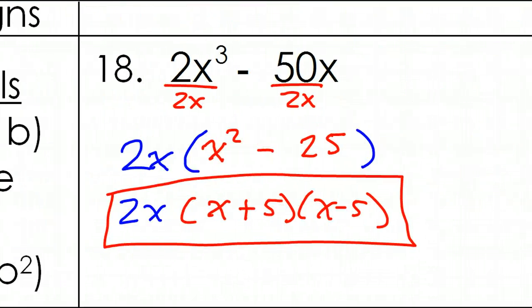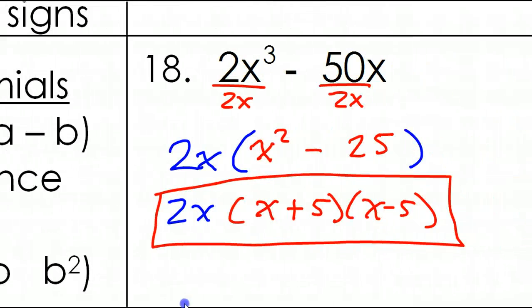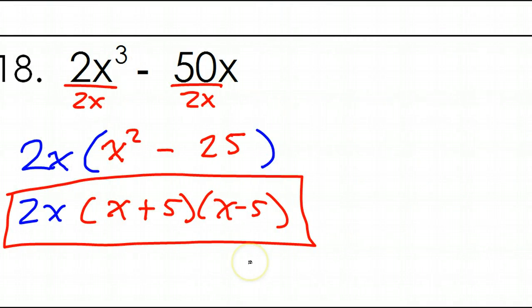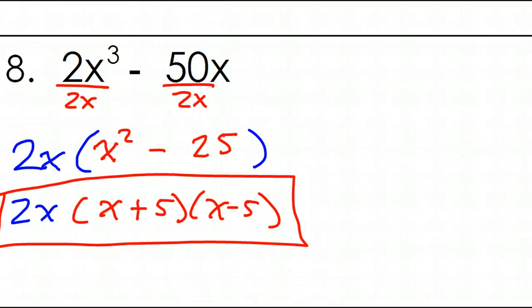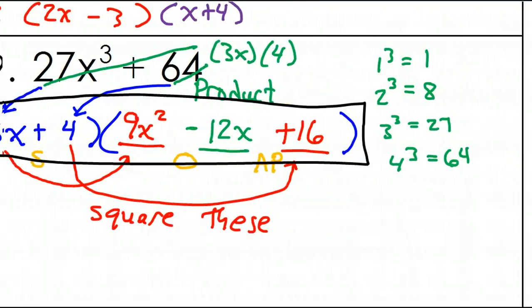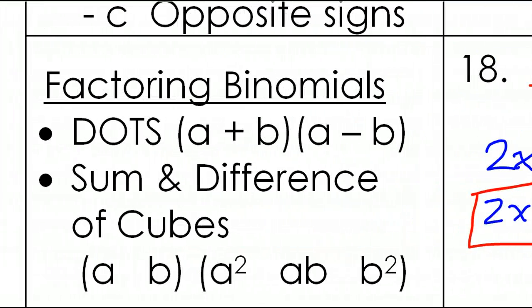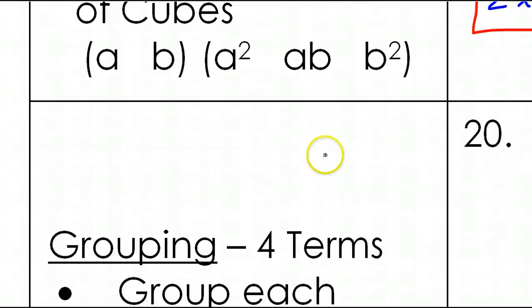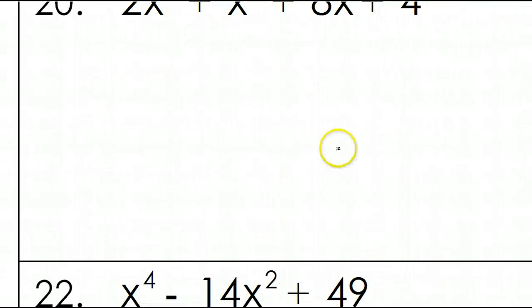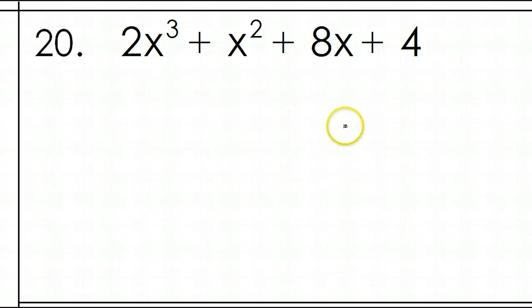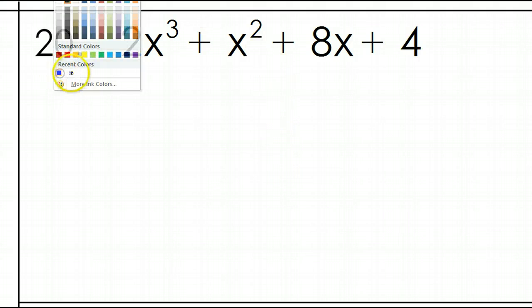Okay, so factoring binomials. We did difference of two squares, and we did sum of two cubes. So maybe that's it for binomials. Let's move on to four terms. So, trinomials, we did trinomials. What about if we have four terms? If you have four terms, grouping is the first thing that you should try.